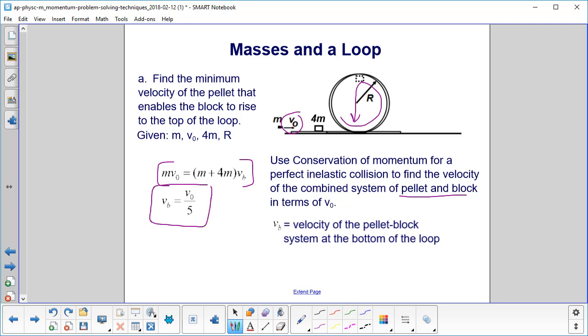And vb, that's going to be our velocity of the pellet-block system at the bottom of the loop. So we're not using little m, big m like we did in the previous problem, because we want to focus on b, the bottom of the loop. That's its velocity right down here.